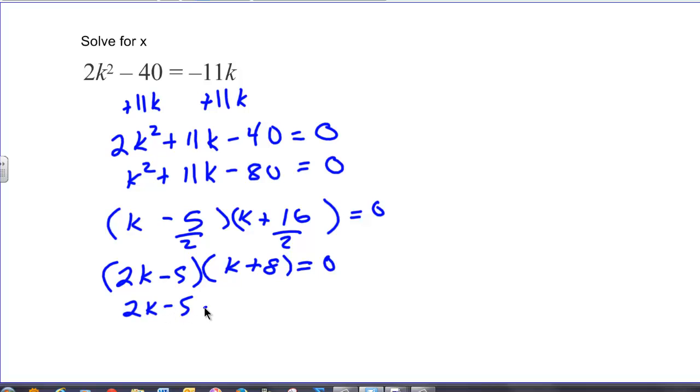2k minus 5 equals 0 and k plus 8 equals 0. Therefore add 5 and divide by 2. k is equal to 5 over 2. Subtract 8 in this case. k is equal to negative 8.